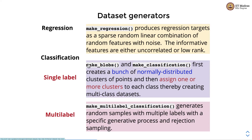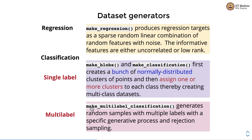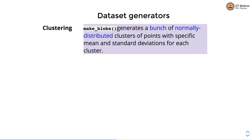There are also functions for generating synthetic datasets for classification and clustering experiments. For single-label classification, we use make_blobs or make_classification, which create normally distributed clusters of points and assign one or more clusters to each class, thereby creating multi-class datasets. For multi-label classification, where each sample gets more than one label, we use make_multilabel_classification to generate random samples with multiple labels using a specific generative process and rejection sampling so that none of the samples gets zero labels. For clustering, we use the make_blobs API for generating normally distributed clusters of points with specific mean and standard deviation for each cluster.